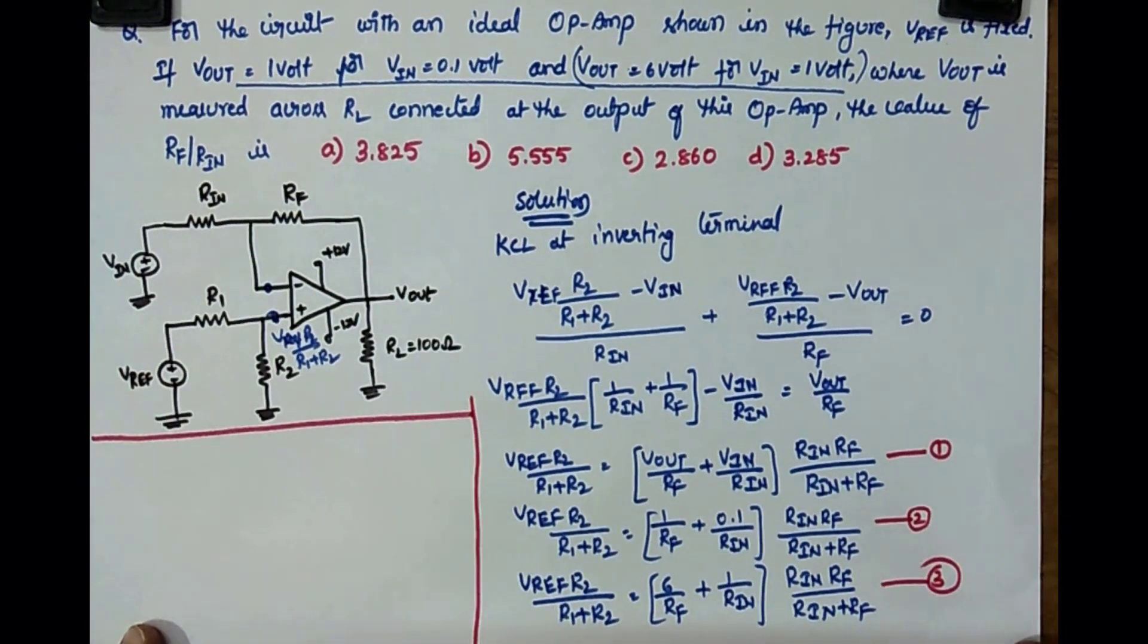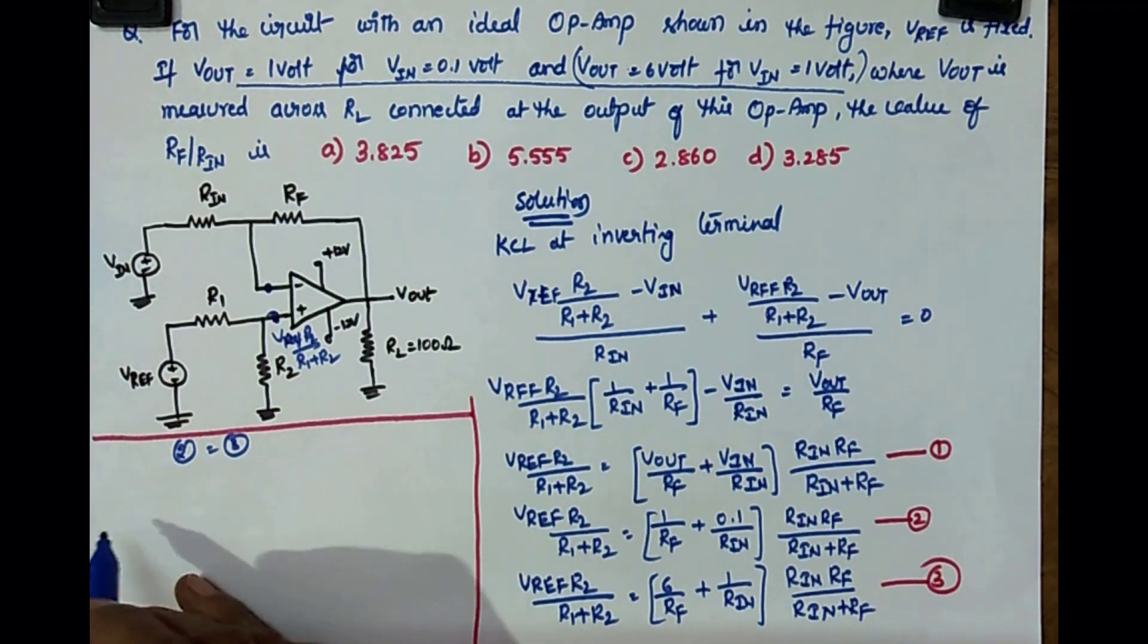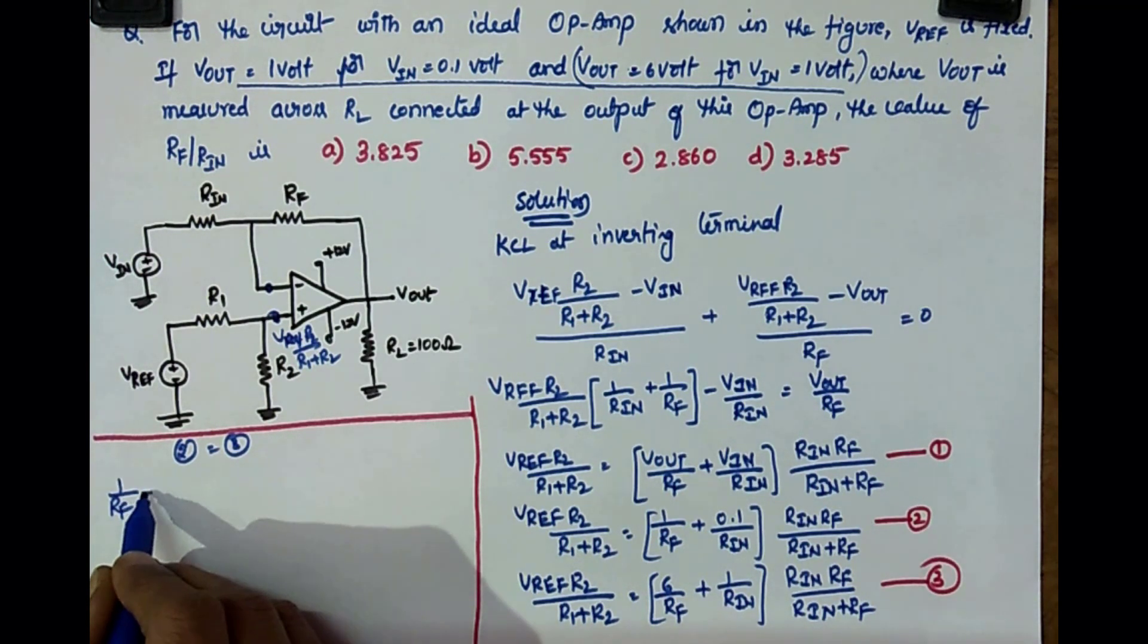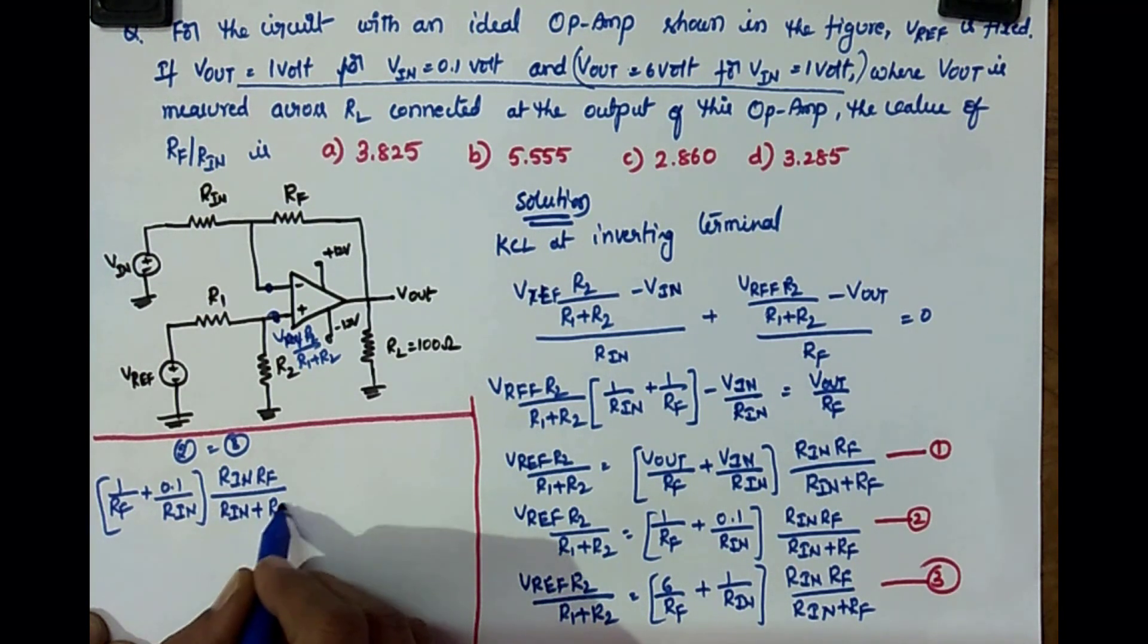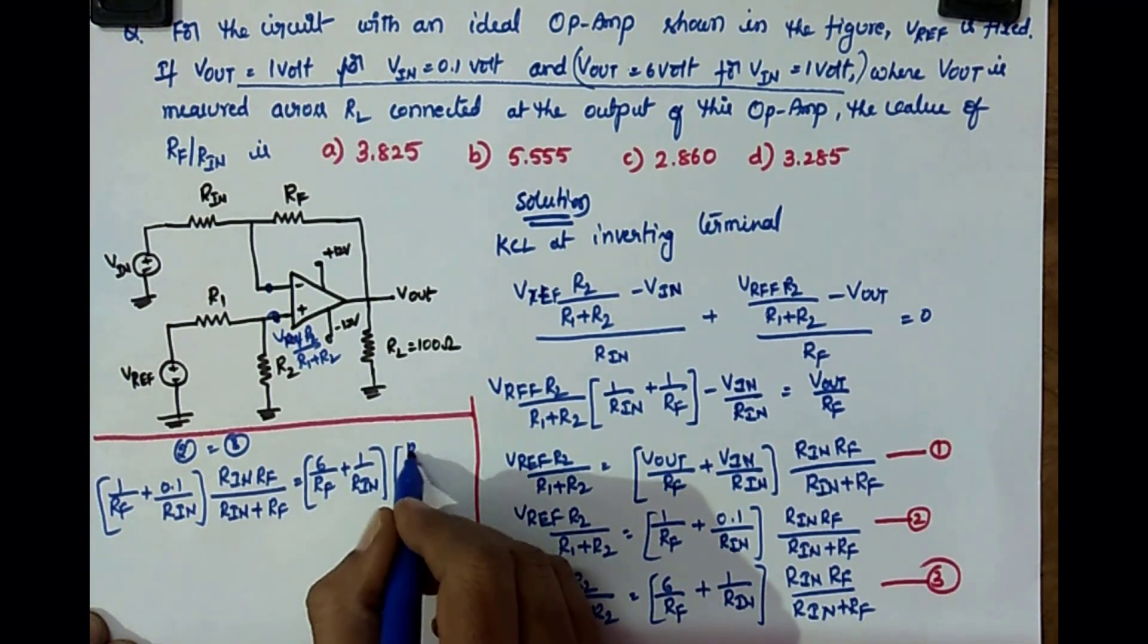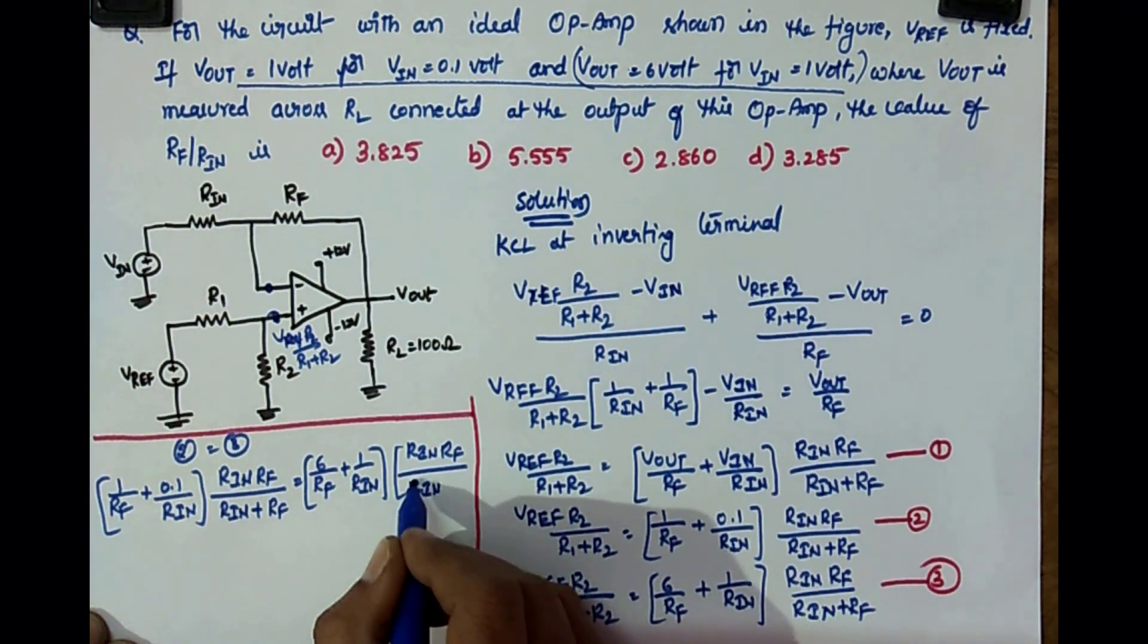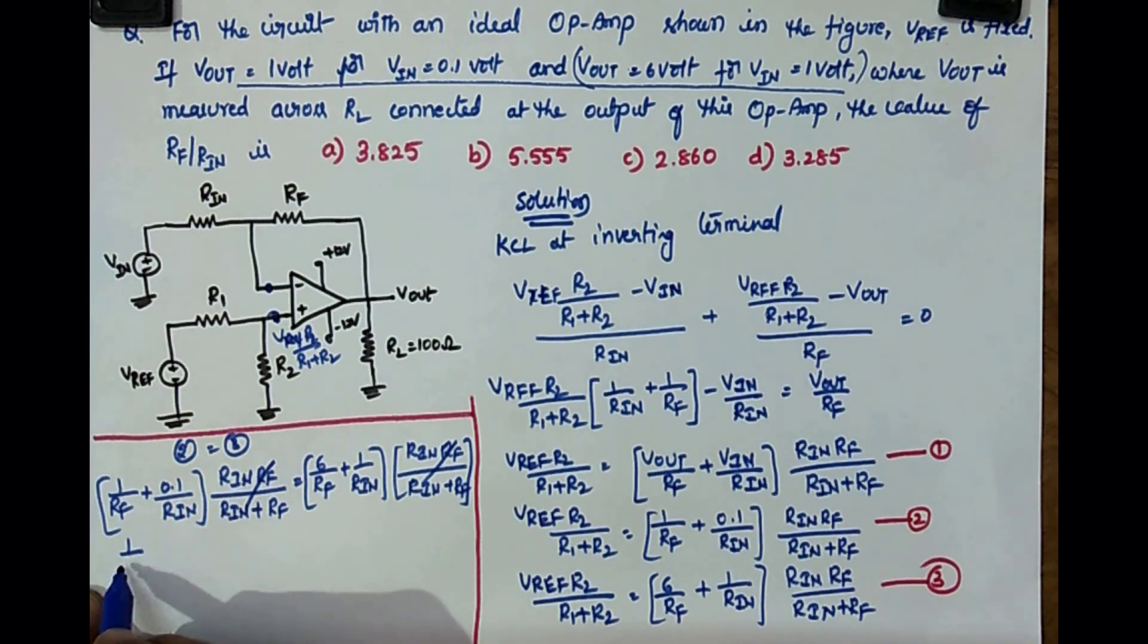Now equate as the equation number 2 and 3 have the same value, equate 2 and 3. So I will get as if you equate 1 by Rf plus 0.1 by Rn into Rn Rf by Rn plus Rf is equal to 6 by Rf plus 1 by Rn into Rn Rf by Rn plus Rf. Fine. So let's cancel. So it will be 1 by Rf plus 0.1 by Rn is equal to 6 by Rf plus 1 by Rn.